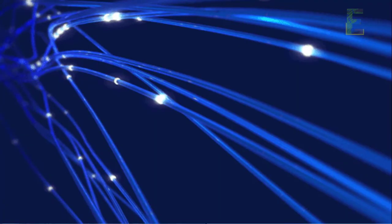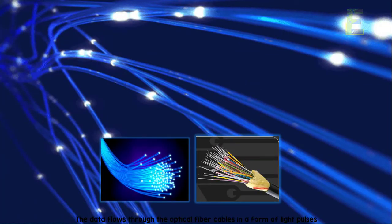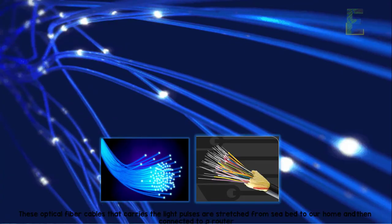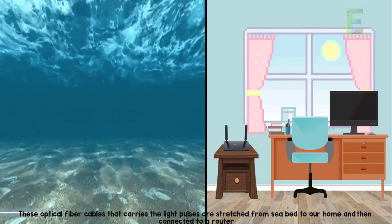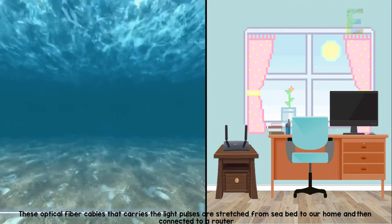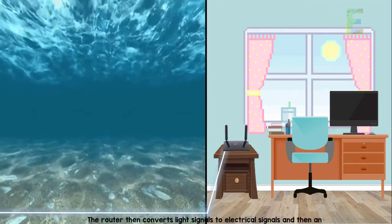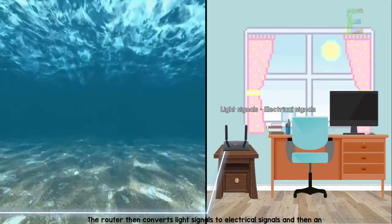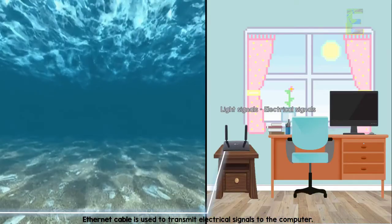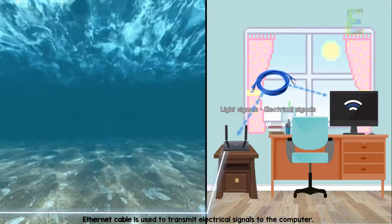The data flows through optical fiber cables in the form of light pulses. These optical fiber cables carrying the light pulses are stretched from the seabed to our homes and then connected to our router. The router then converts light signals to electrical signals, and an Ethernet cable is used to transmit electrical signals to the computer.